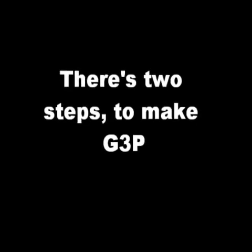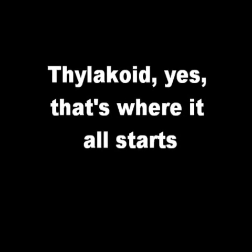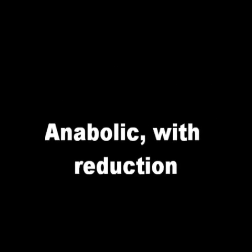Photosynthesis happens by itself. There's two steps to make G3P: light reactions and Calvin Cycle — no idea how important they are. Thylakoid, that's where it all starts. Get ready, cause here it all comes — anabolic with reduction, gonna use sunlight to make sugar.